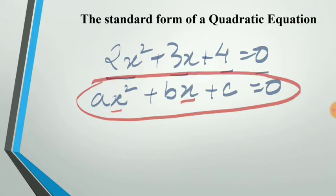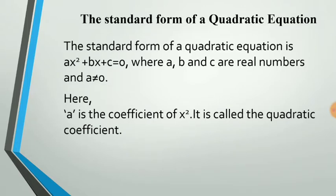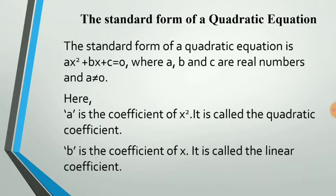The coefficient of x squared is always represented as a, and we call it the quadratic coefficient. The coefficient of x is represented by b, and we call it the linear coefficient. And c is the constant. The condition for an equation to be a quadratic equation is that a must not equal 0, and a, b, c can be any real numbers. So the standard form is ax squared plus bx plus c equal to 0, where a, b, c are real numbers and a is not equal to 0.